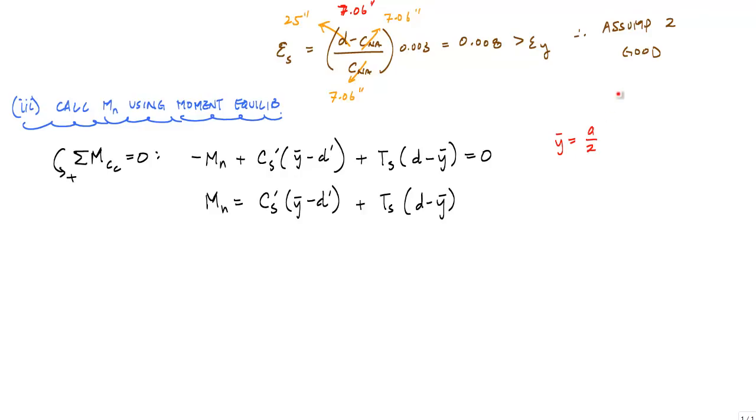I just need to substitute for force values. This MN in equation form is A'S times ES (the strain in the compression steel) times Y bar, which is A over 2 minus D prime, plus ASFY (the force in the tension steel) times D minus A over 2.